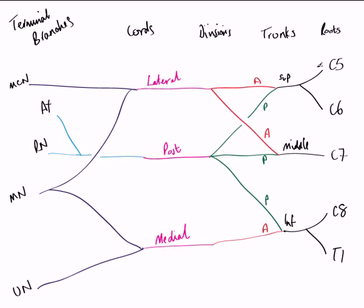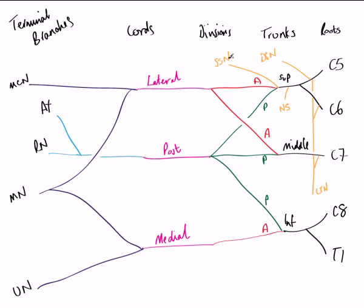Starting with the roots: originating from C5 is the dorsal scapular nerve (DSN). Coming away from C5, C6, and also C7 is the long thoracic nerve (LTN). So these two nerves come specifically from the roots of the brachial plexus. Coming from the superior trunk, we have the suprascapular nerve and also the nerve to subclavius. So, from the roots: dorsal scapular nerve and long thoracic nerve; from the superior trunk: the suprascapular nerve and the nerve to subclavius.